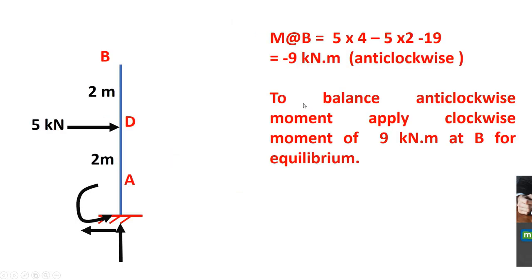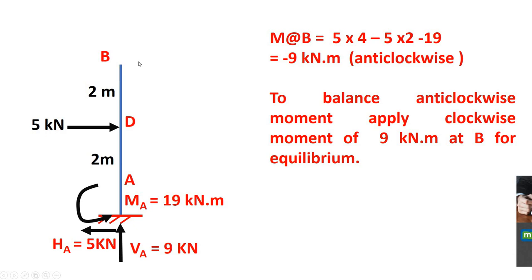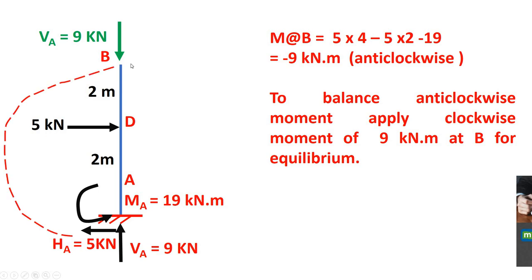Now let us draw the free body diagram. These are our reactions. Consider the joint — the summation of all forces and moments must equal zero. We have 5 kN upward on the left side, so we apply it downward on the right. Here we have minus 5 and plus 5, so five minus five equals zero — no need to apply a horizontal force.